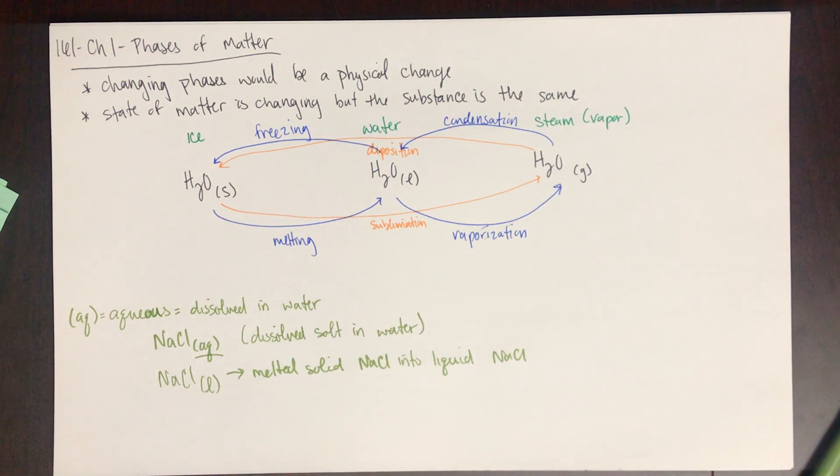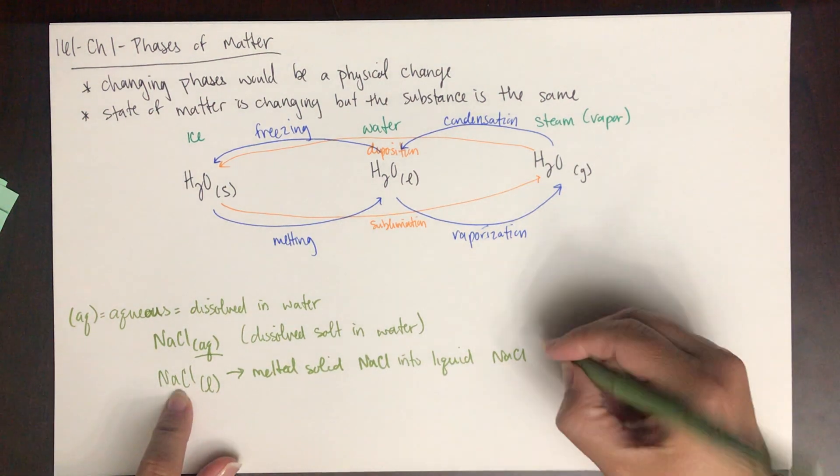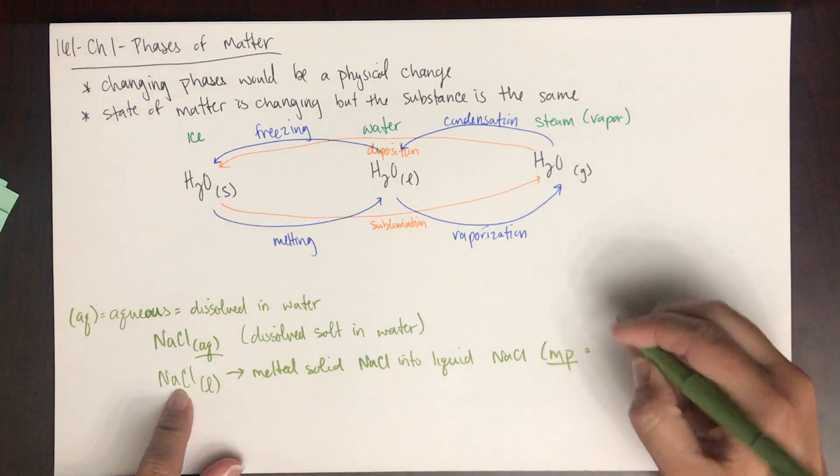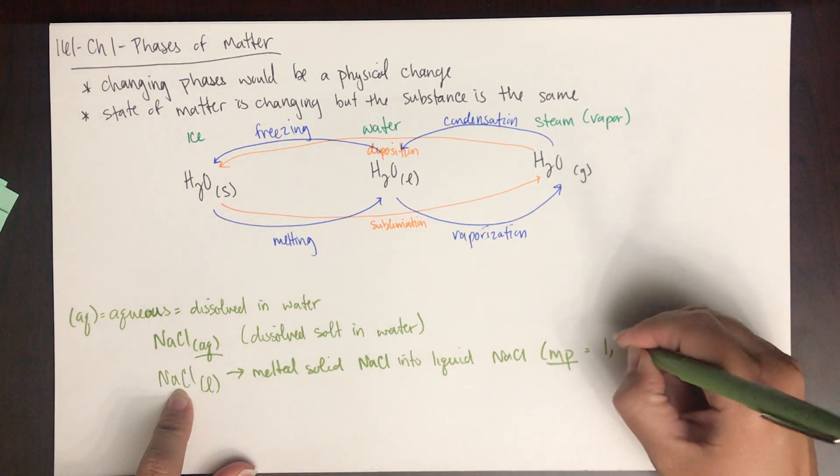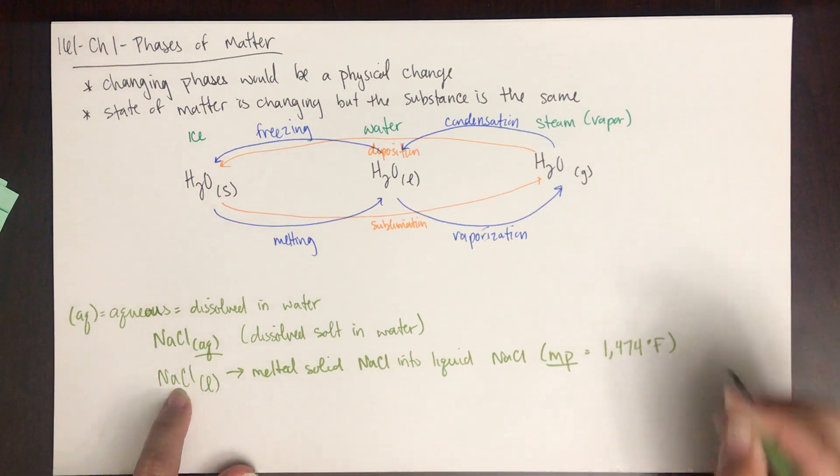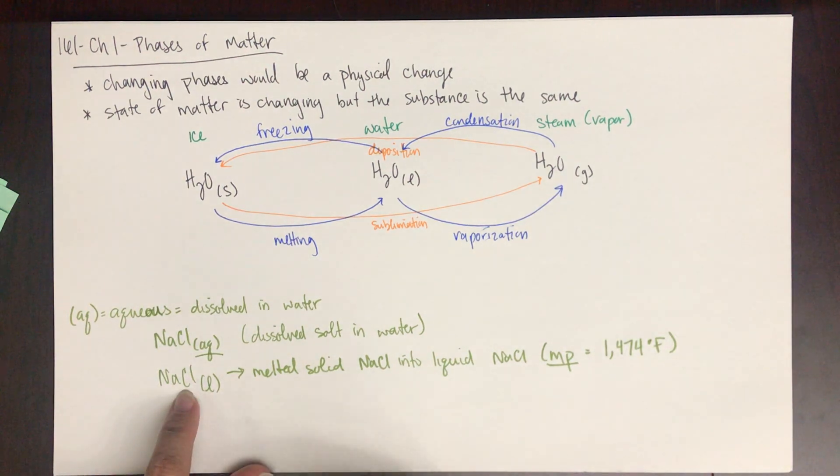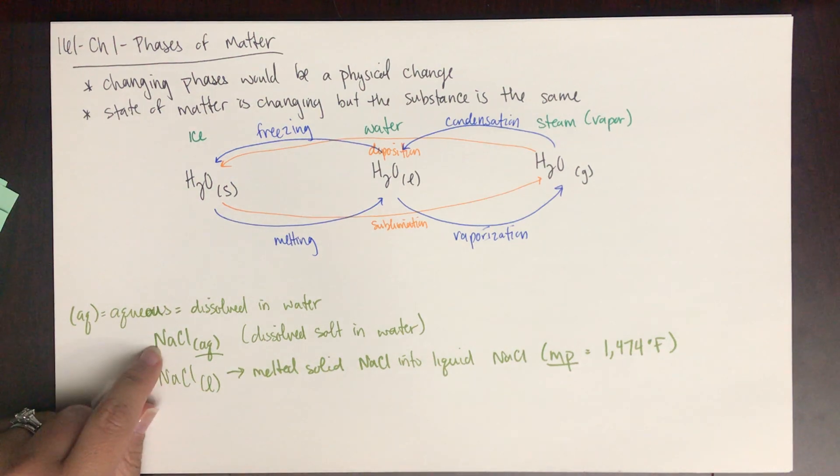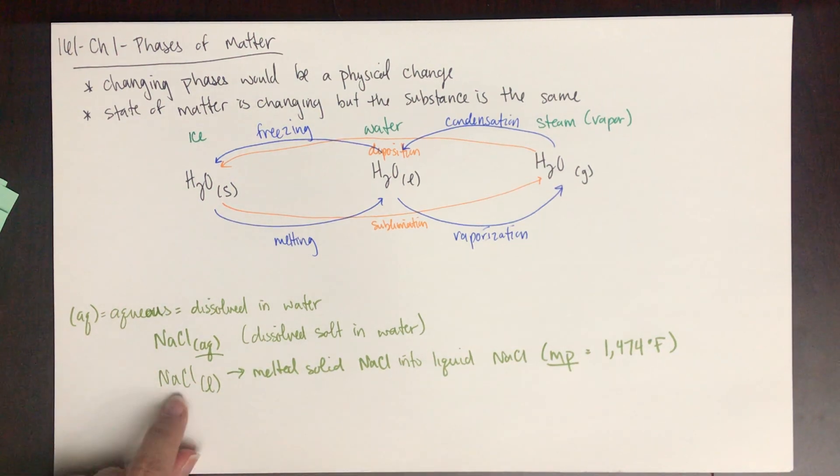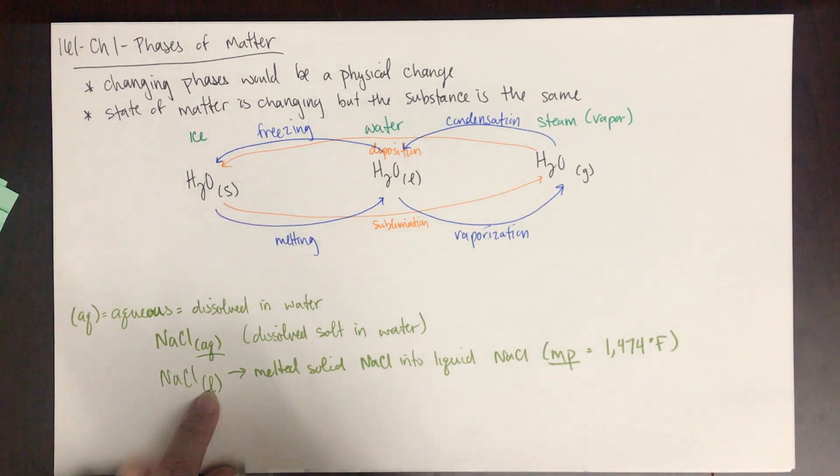Aq means that substance has been dissolved in water. It would not be NaCl liquid, because what that means is you have melted solid NaCl into liquid NaCl, and that is not what you have done. The melting point of salt, NaCl, is 1474 degrees Fahrenheit.